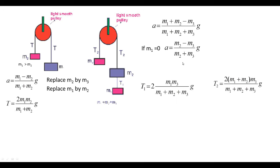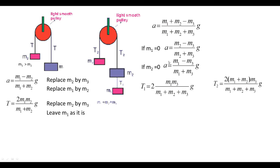Making m2 equal to 0 in the acceleration expression gives (m1 minus m3)/(m1 plus m3)·g. The system now has only m1 and m3 as blocks. Following the guideline: replace m2 with m3 and leave m1 as it is. Substituting into the expression gives m1 minus m3 divided by m1 plus m3, multiplied by g — which matches.